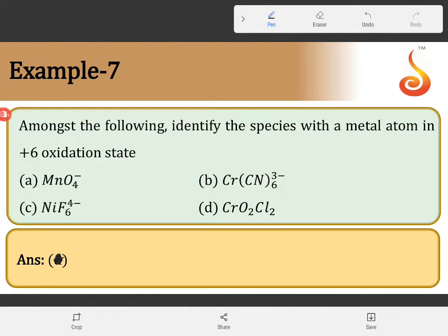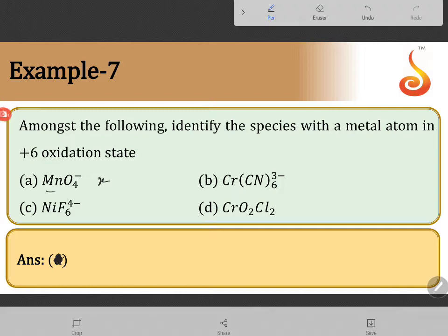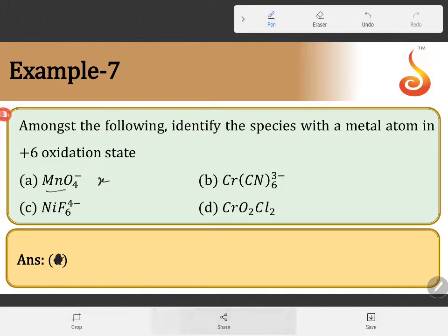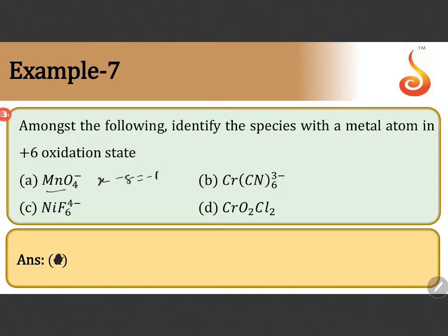Now very simple, you need to just calculate the oxidation number rules. So first, this is your permanganate ion. x minus 8 is equal to minus 1. x will be plus 7. Therefore this is not the answer. They are asking for plus 6 oxidation state.